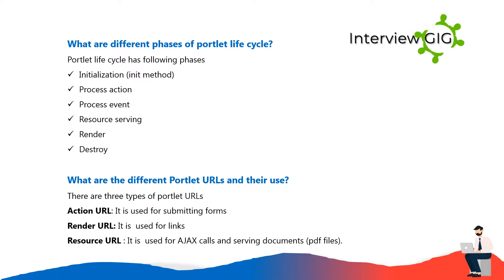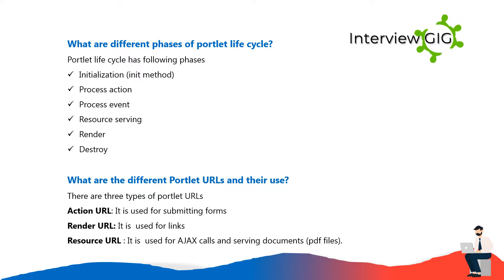There are three types of portlet URLs: Action URL, used for submitting forms; Render URL, used for links; and Resource URL, used for AJAX calls and serving documents such as PDF files.